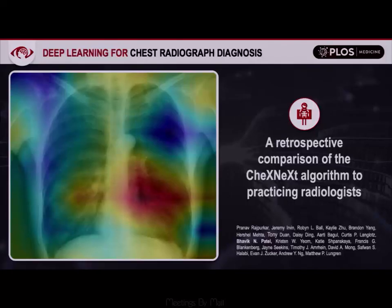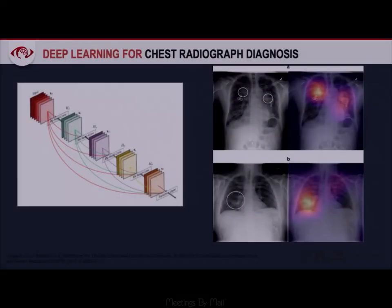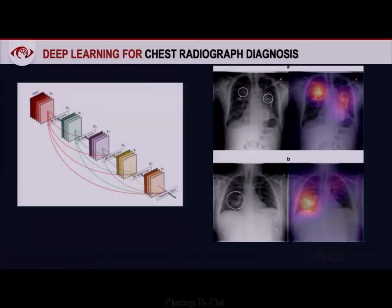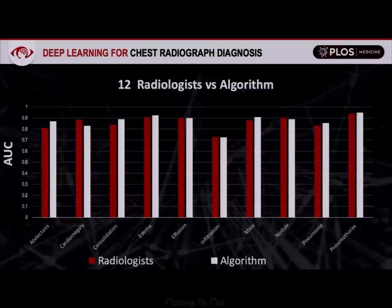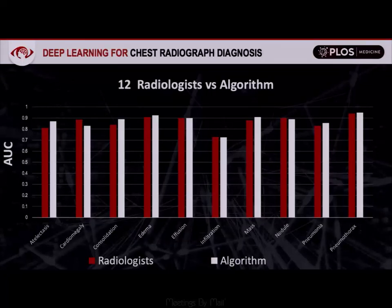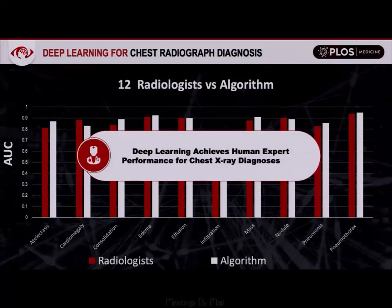A lot of our early work involves chest radiographs. We took a CheXNet model — a 121-layer DenseNet neural network — and compared it to practicing radiologists. Class activation maps show it looking at pneumonia. When comparing performance for various pathologies on chest radiographs, the AI model does either as well or in some cases better than the radiologists. Deep learning achieves human expert performance for chest X-ray diagnosis.